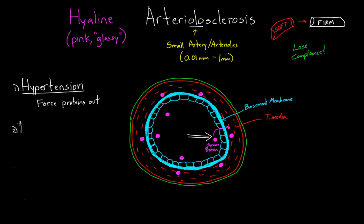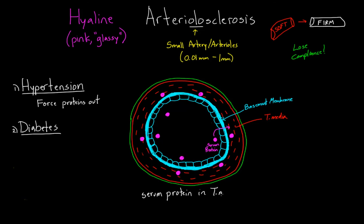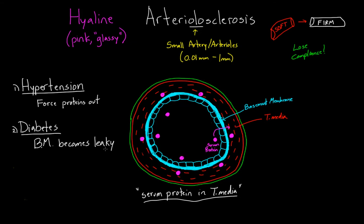Now, in diabetes — which is the other disease you often hear about with hyaline arteriolosclerosis — a different thing is happening. The key is figuring out how protein ended up in the tunica media. In diabetes, the way that happens is that the basement membrane becomes leaky. It's not that you're forcing the proteins out; you're actually making it easier for them to get into the tunica media, because the basement membrane (BM) becomes leaky. How it becomes leaky is actually an interesting story.